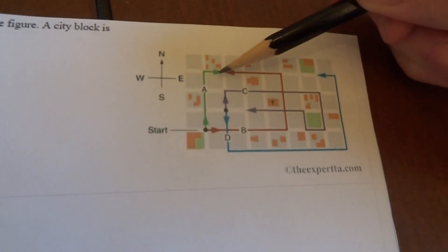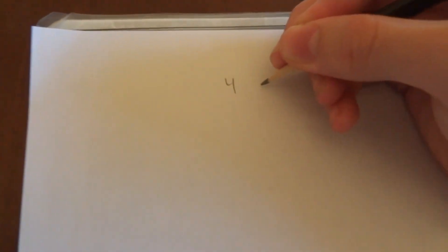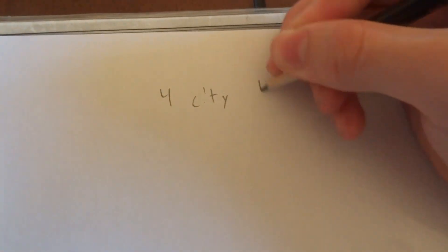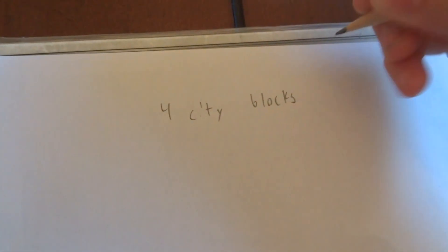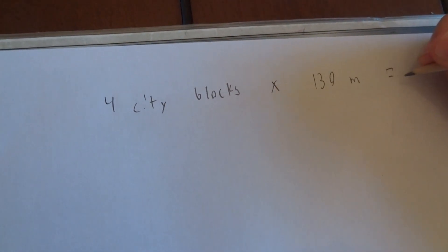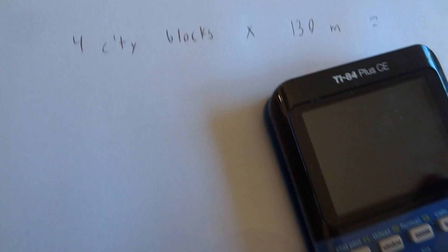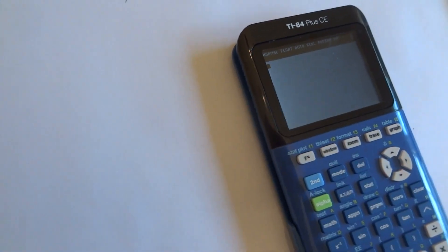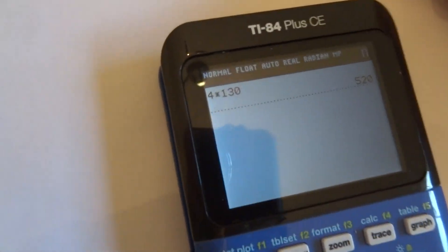So 4 city blocks times 130 meters per city block is equal to 520 meters in total distance traveled. So that was simple.